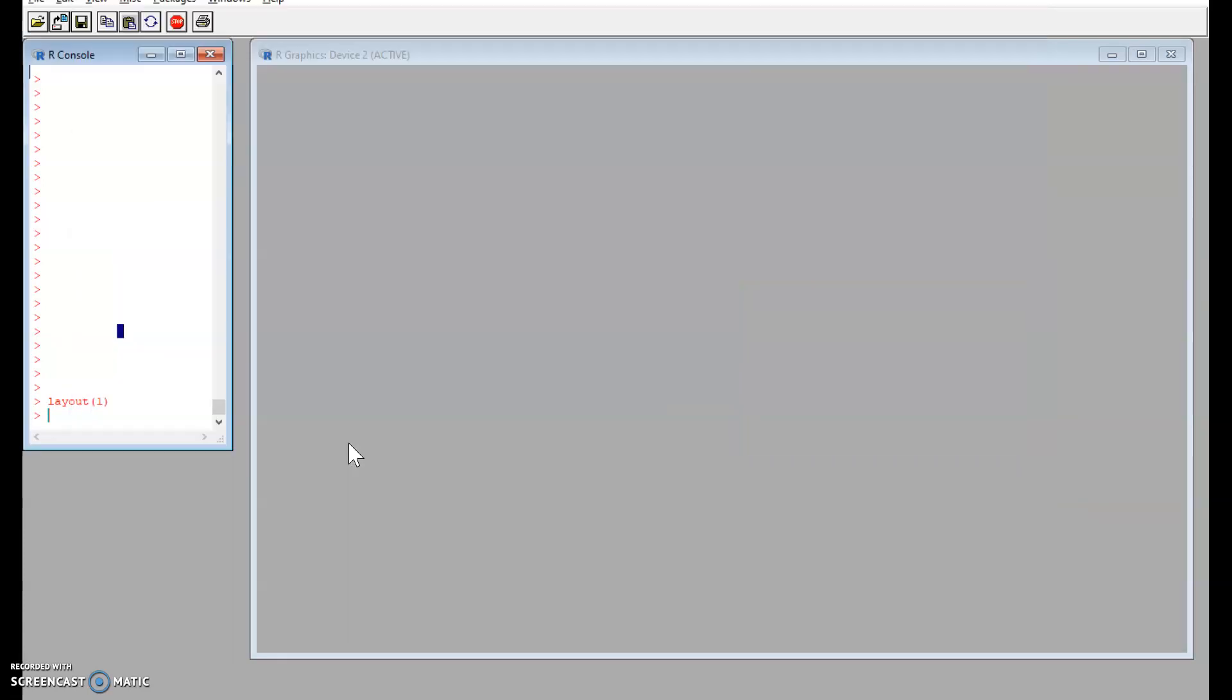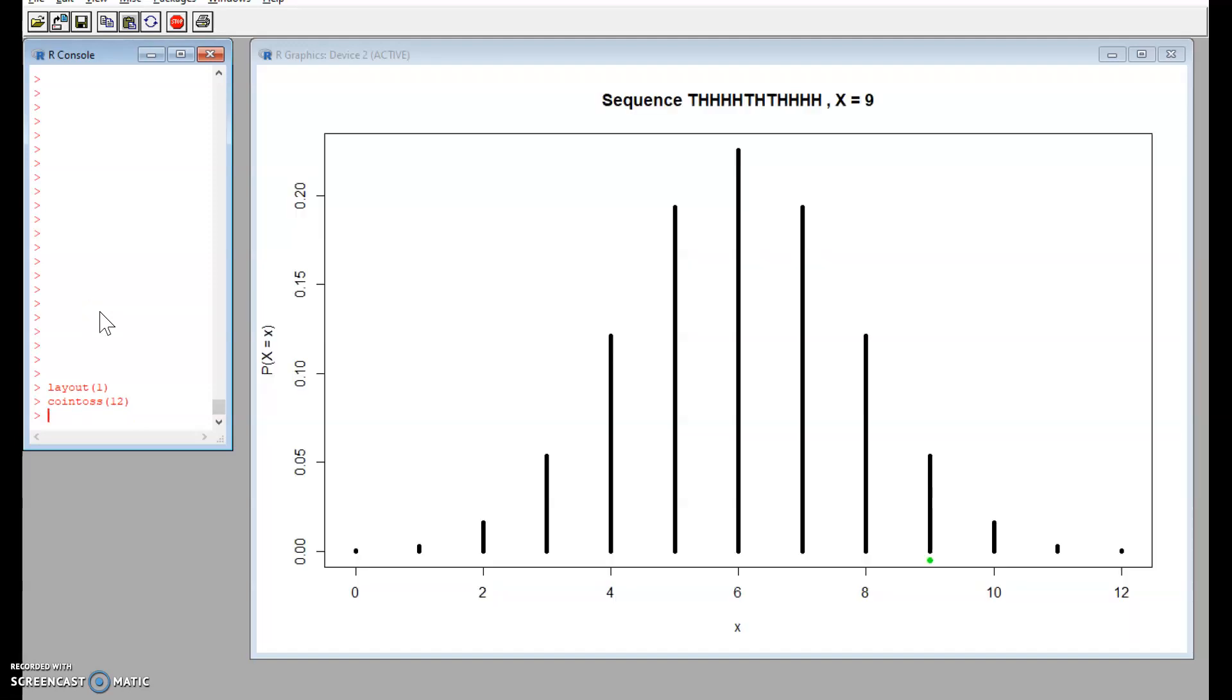If we take a look at our experiment, I've coded up a coin tossing experiment in R. So traditional example of a binomial experiment with p equals a half, here n equals 12 as our 12 coin tosses.